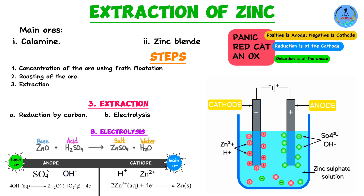An important detail is the type of electrodes used. The anode consists of aluminum sheets, while the cathode consists of lead containing 1% silver (99% lead, 1% silver). The nature of the electrode is crucial because it determines the products obtained.